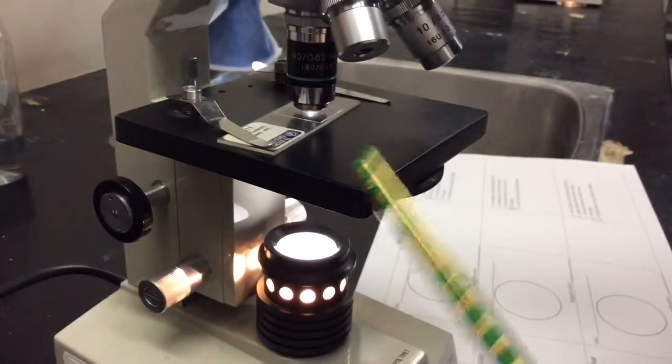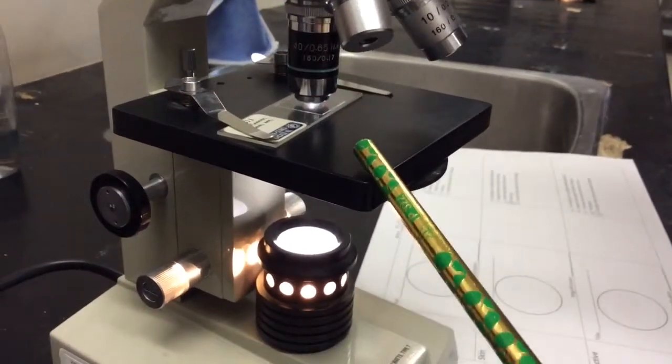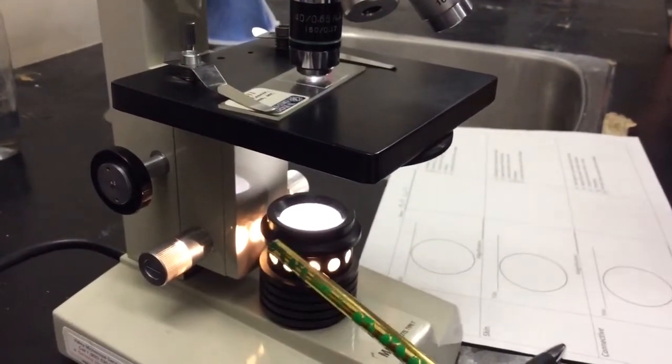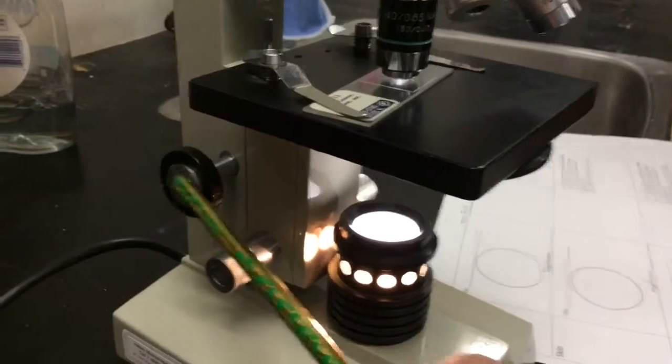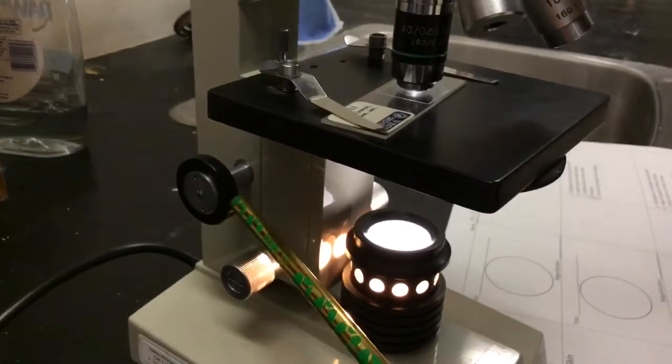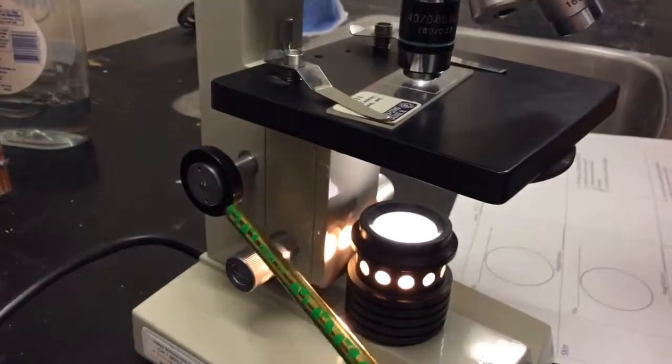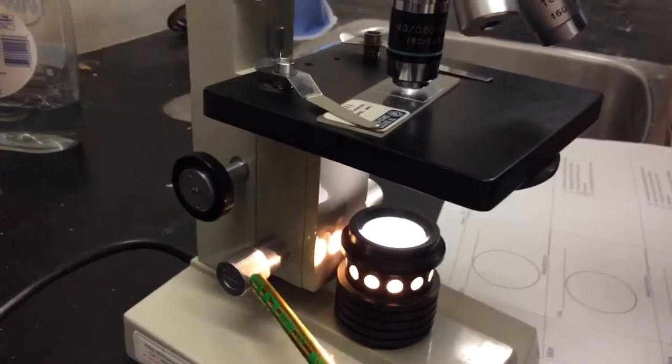What do we call this thing here? Oh, a stage. This is called the stage. What about this guy down here? That's a light. What kind of adjustment is this one? Is it the coarse adjustment or the fine adjustment? It's the coarse. And then this guy is the fine. Excellent.